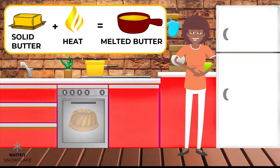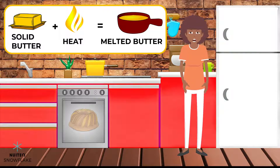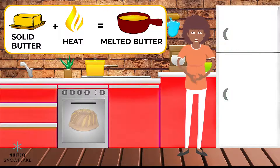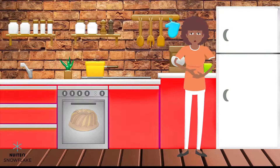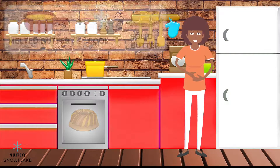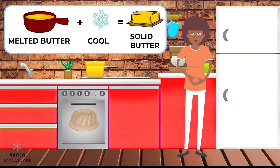Somehow though, I accidentally melted too much butter. But instead of throwing the rest away, I put it in the fridge. So now it has turned back into butter again, because cooling melted butter makes it solid again.